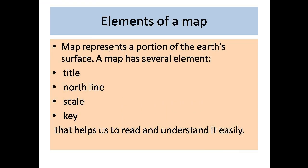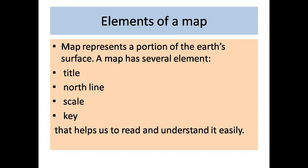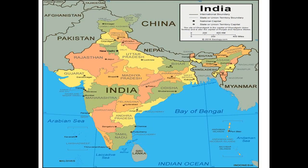A map represents a portion of the earth's surface. It has several elements such as a title, north line, scale, and key that help us to read and understand it easily. Let us discuss all these elements of the map.